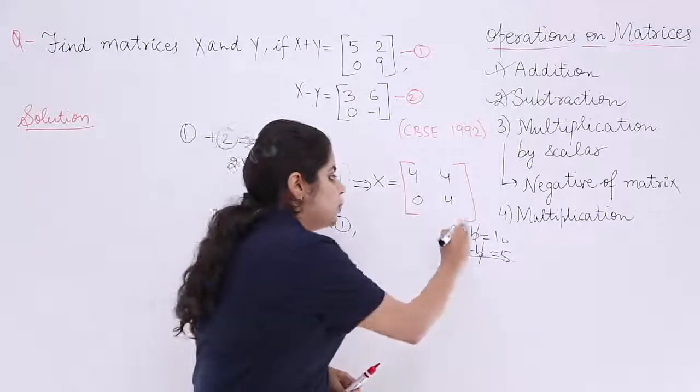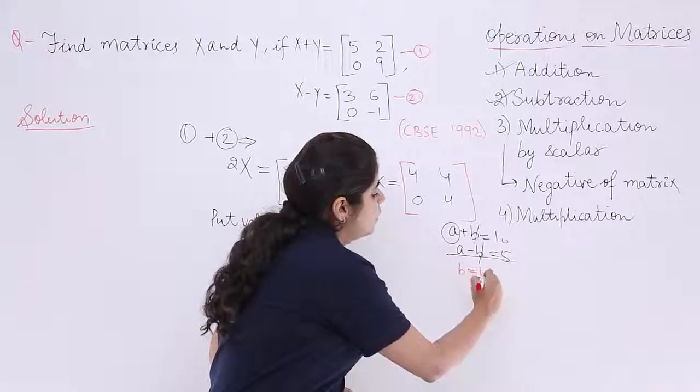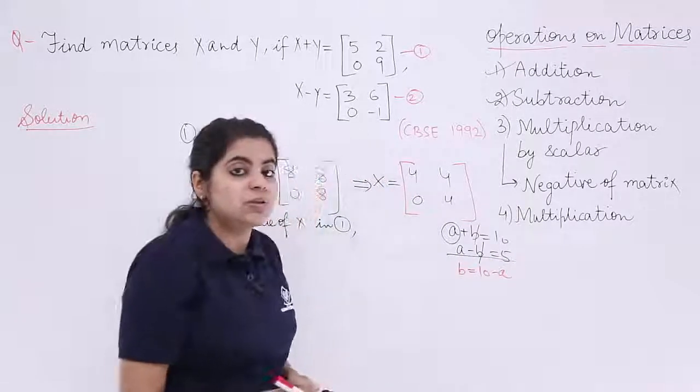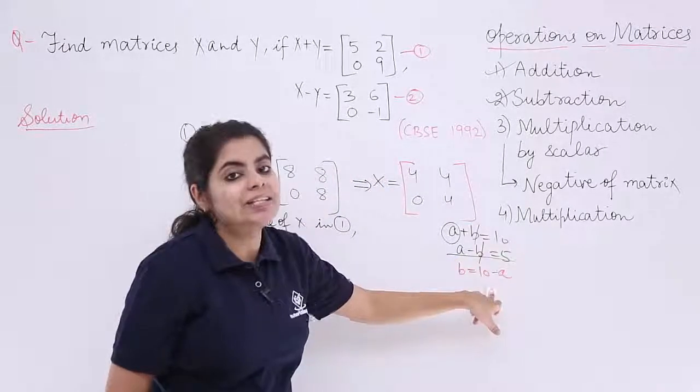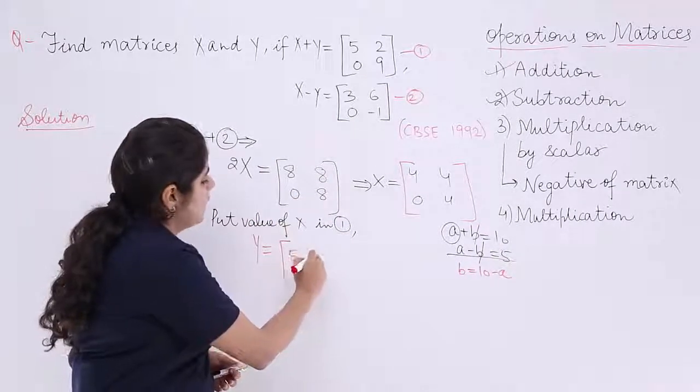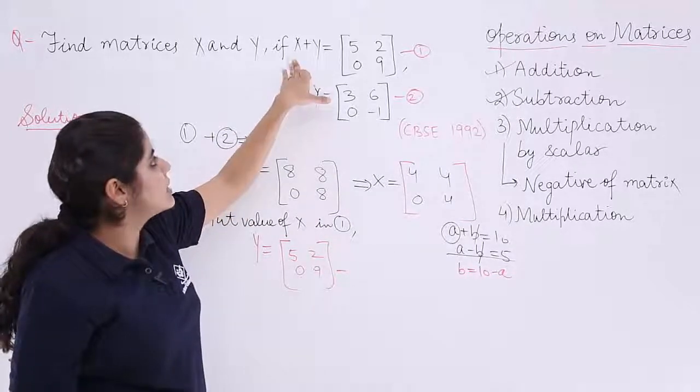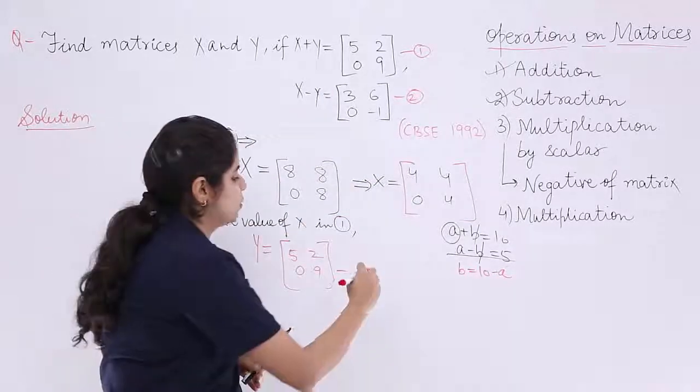Remember, suppose you put the value of a and now you want b in this equation. What will you do? b is equal to 10 minus a, right? So that means right hand side is intact. Similarly here also, the right hand side is intact. It is 5, 2, 0, 9 minus the first matrix. The first matrix is X. What is X? 4, 4, 0, 4.